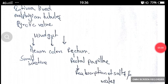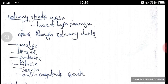Salivary glands are present in a pair. They are present at the base of the hypopharynx and open through salivary ducts. They secrete several enzymes like amylases, lipases, and proteases. They also produce anticoagulants like fibronin and saccharine.